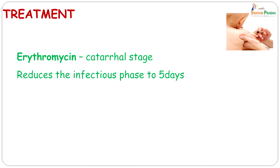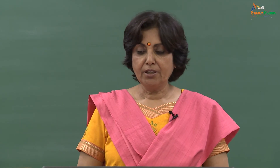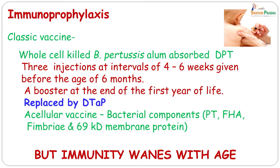Treatment of whooping cough is by giving erythromycin or other macrolides, especially if given early in the catarrhal stage, as it reduces the infectious phase to 5 days. Immunoprophylaxis is very important. In the past, the classic vaccine was a whole-cell killed Bordetella pertussis alum-absorbed DPT vaccine, given at intervals of 4 to 6 weeks before the age of 6 months, with a booster at the end of the first year of life.